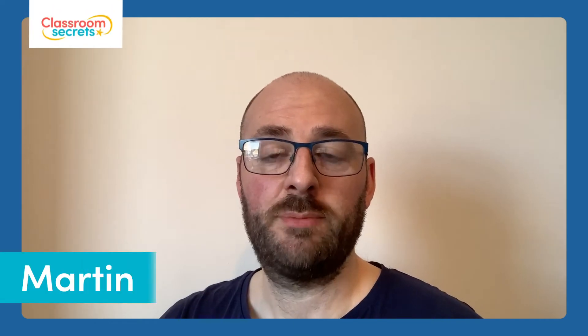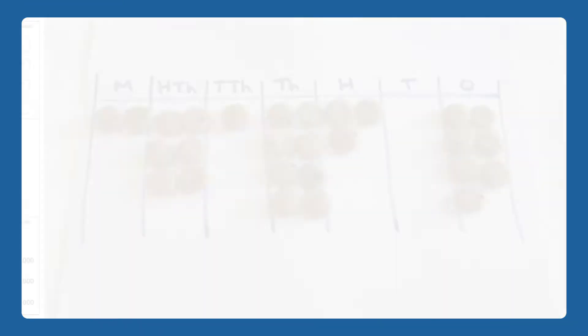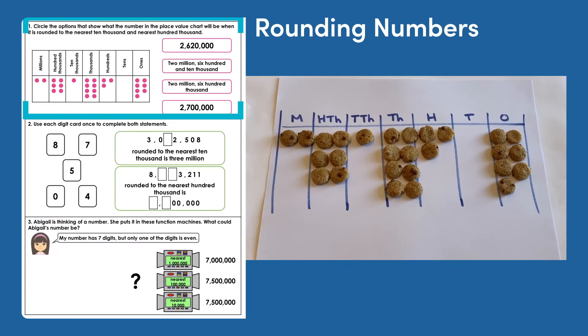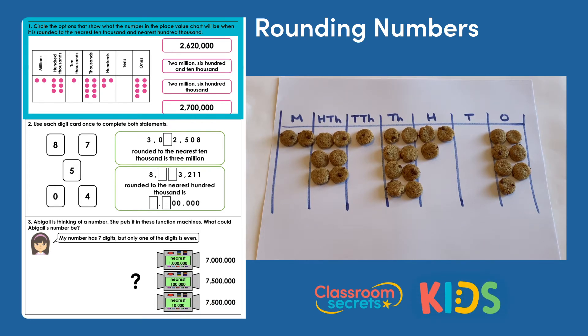Hello and welcome to this answer explanation video. This video will talk you through the answers to the rounding numbers worksheet and we'll take you through some of the tricky bits. Question one says: circle the options that show what the number in the place value chart will be when it is rounded to the nearest ten thousand and nearest hundred thousand.